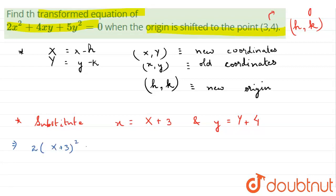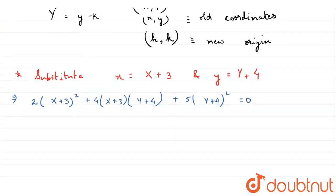Now it will be 2 into (capital X plus 3) whole square plus 4 into (capital X plus 3) and so on. We will keep on substituting. And now we will expand and multiply (X plus 3) and (Y plus 4) as well.